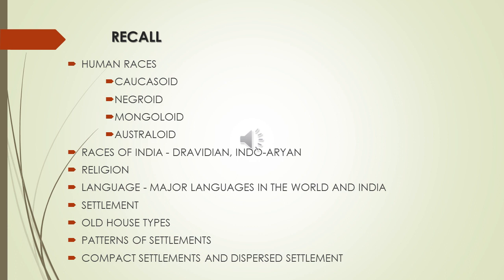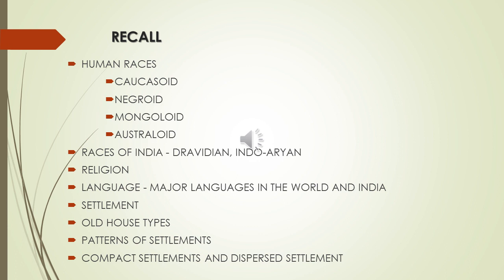In today's class we will discuss rural settlement and urban settlement. The hierarchy of settlement — that is, the arrangement: in rural areas you can see isolated settlement, meaning only one house in a particular area; then hamlet, which is a small group of three or four houses; then village, with a minimum of 50 to 100 houses; then a small market. In urban areas you can see a town, city, and conurbation, classified based on population. You will learn the differences between them.